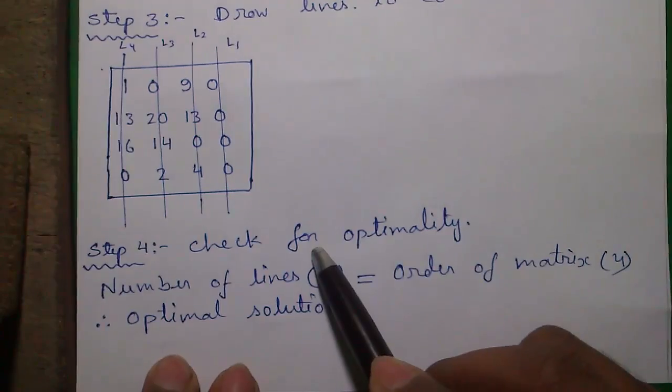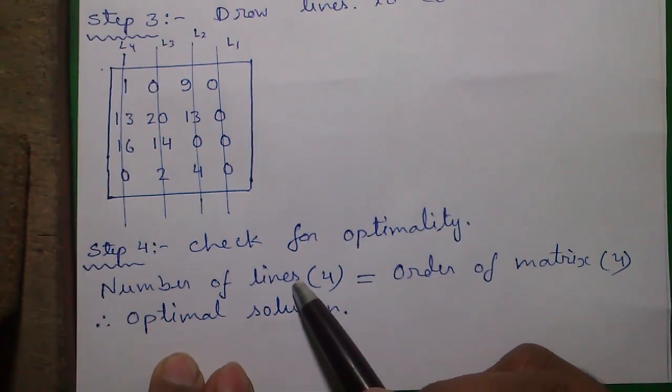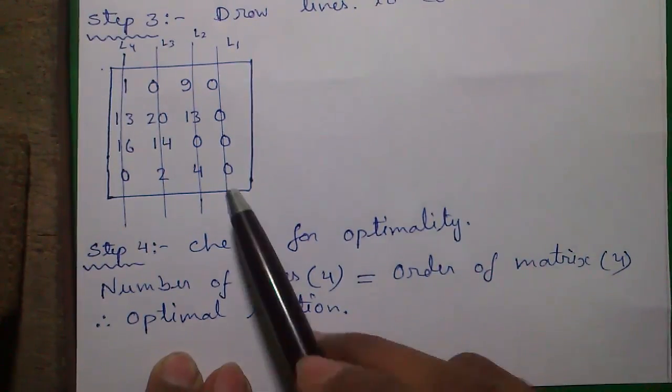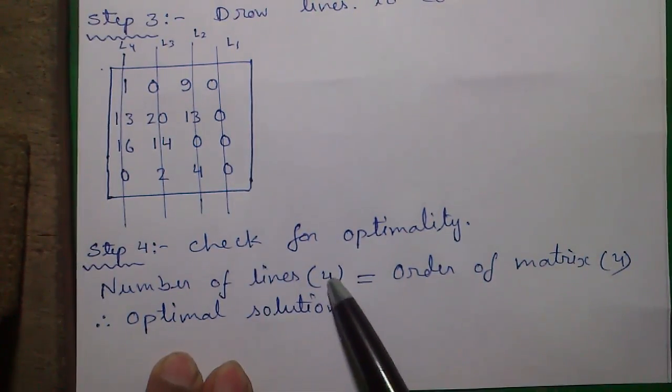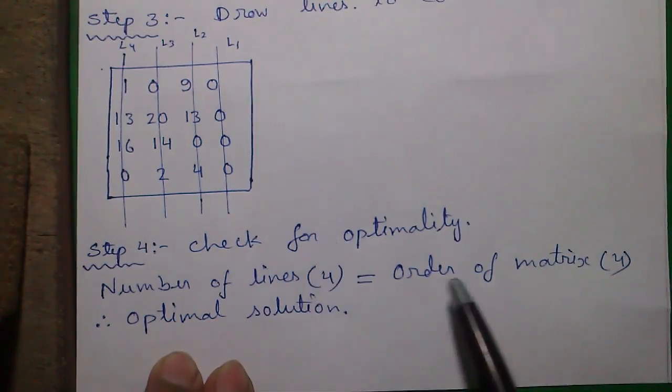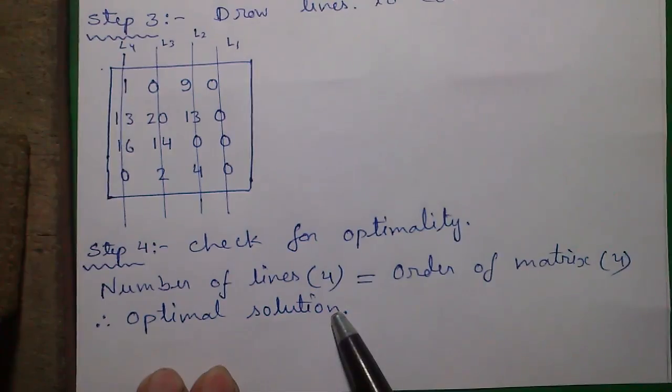Step 4. Check for optimality. Optimality means number of lines must be equal to the order of matrix. Here number of lines are 4, which is equal to order of matrix. It's a 4x4 matrix. So it's an optimal solution.